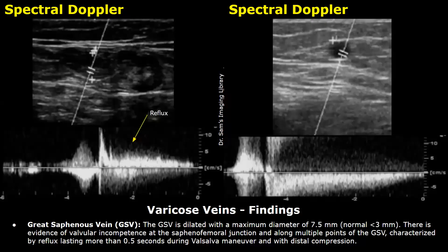Valvular incompetence is noted at the saphenofemoral junction and along multiple points of the GSV, characterized by reflux lasting more than 0.5 seconds during Valsalva maneuver and with distal compression.